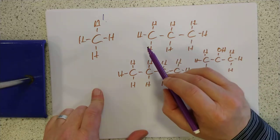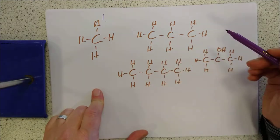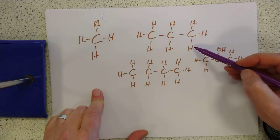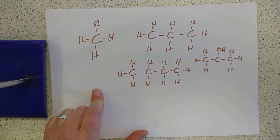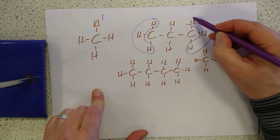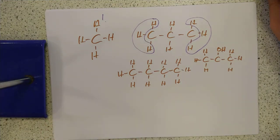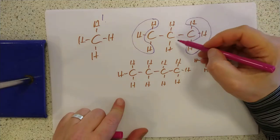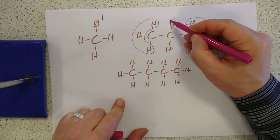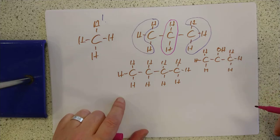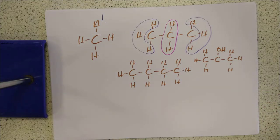This molecule has a CH₃ at one end joined onto a CH₂, which is joined onto another CH₃. The two CH₃ groups are in the same environment as each other, so they are identical from the point of view of NMR. The CH₂ hydrogens, however, are in a different environment. So there are two different environments for this molecule.